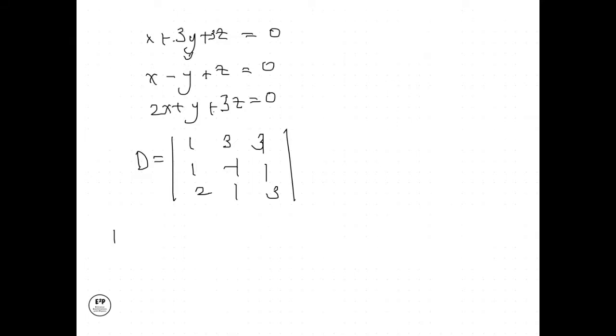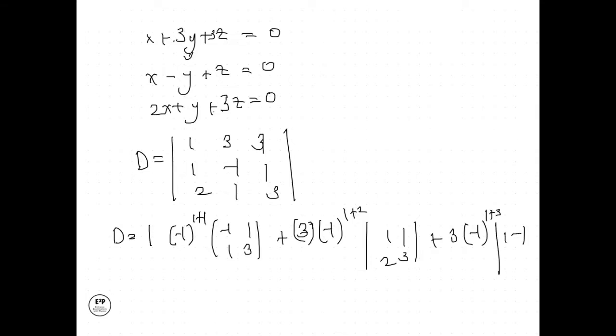So the determinant will be like 1·(-1 to the power 1+1)·(-1·3 - 1·1) plus 3·(-1 to the power 1+2)·(1·3 - 1·2) plus 1·(-1 to the power 1+3)·(1·1 - (-1)·2).